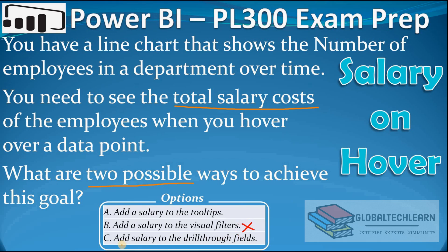Option C is add salary to the drill through fields. The drill through feature is usually used to present additional information, but it does not work like a mouse hover over — it works through a right-click on the data point. But since we've been asked for two possible ways, we can try option C. So now let's try option A and C in Power BI desktop.